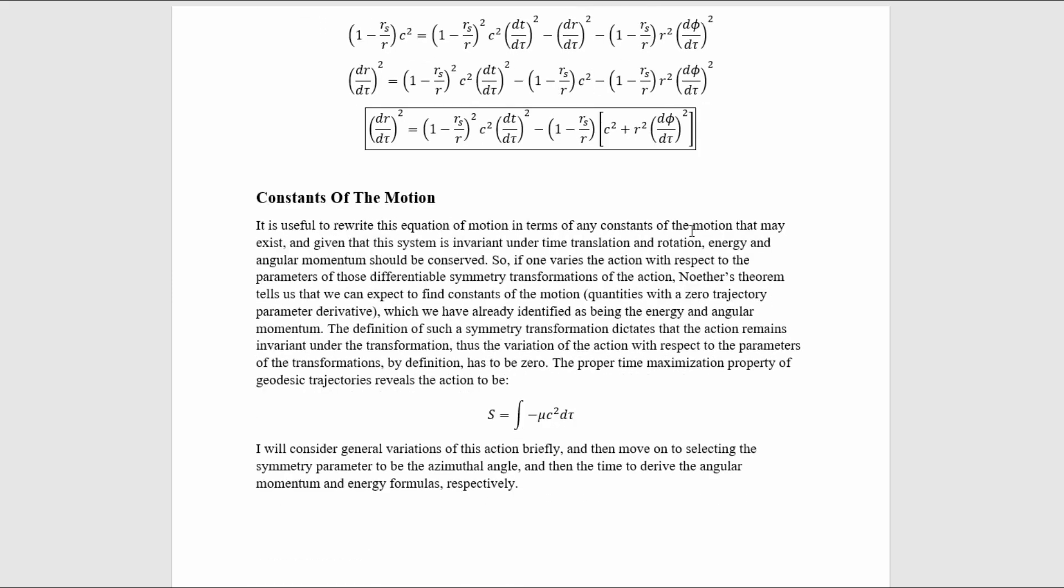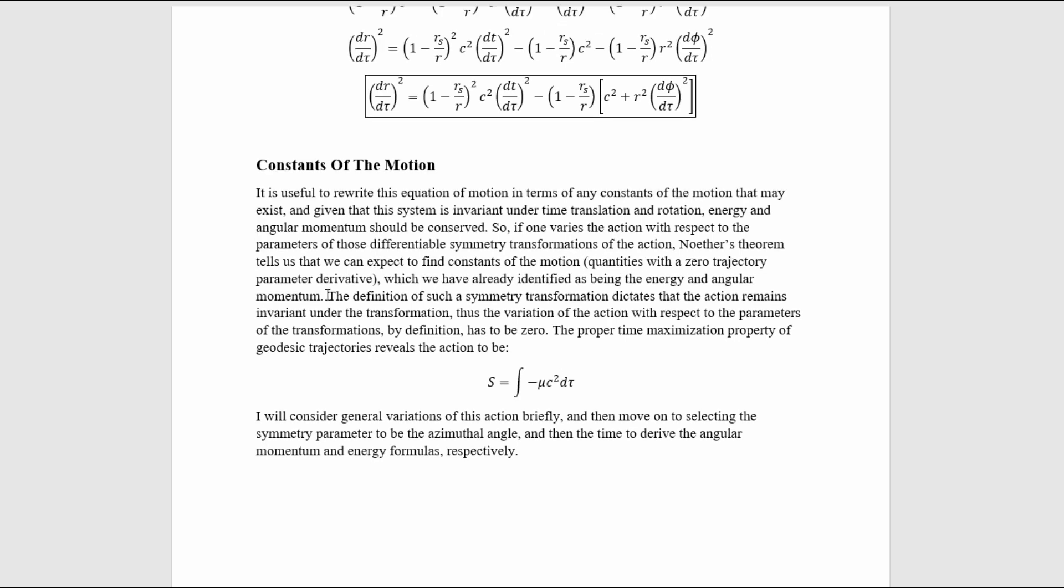It is useful to rewrite this equation in terms of any constants of motion that may exist, and given that this system is invariant under time translation and rotation, energy and angular momentum should be conserved. So if one varies the action with respect to the parameters of those differentiable symmetry transformations of the action, Noether's theorem tells us that we can expect to find constants of the motion, quantities with a zero-trajectory parameter derivative, which we have already identified as being the energy in the angular momentum.